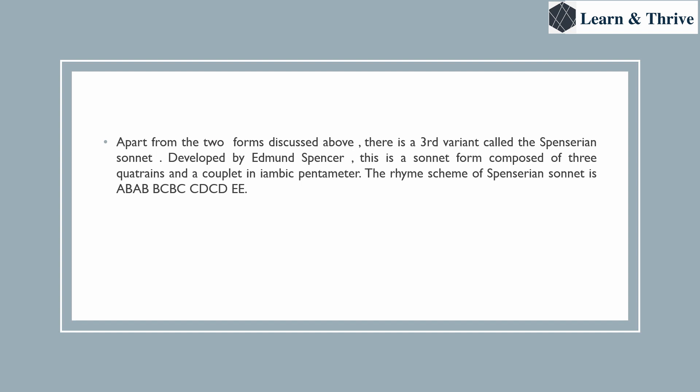Apart from the two forms discussed, there is a third variant written during the Elizabethan time — the Spenserian sonnet, written by Edmund Spenser. This is a sonnet form composed of three quatrains and a couplet in iambic pentameter. You also have three sets of four lines and one rhymed couplet where the last two words rhyme. The rhyme scheme is: a b a b b c b c c d c d e e.